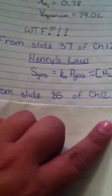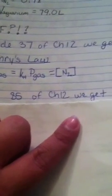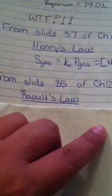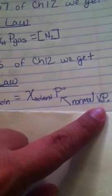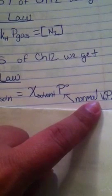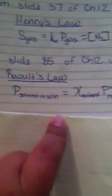And then from slide 85 of chapter 12, we get Raoul's Law. Ooh, sorry about that. And Raoul's Law actually relates the pressure of the solvent in solution to the mole fraction times the pressure, which is the normal vapor pressure. And everything's normal vapor pressure is one atmosphere. So we're actually gonna be good to go from here.